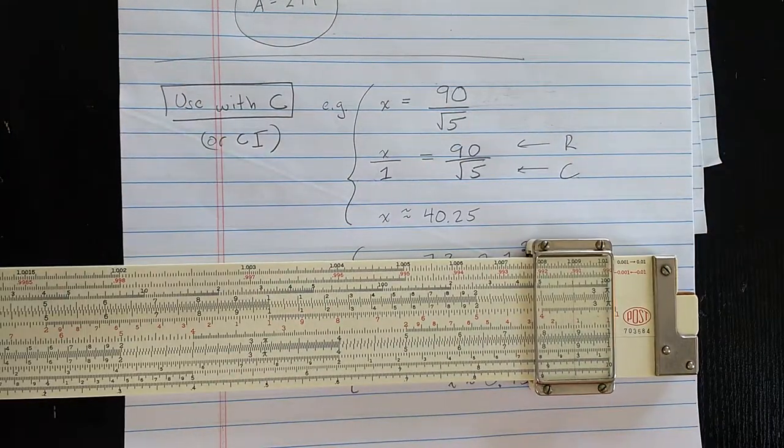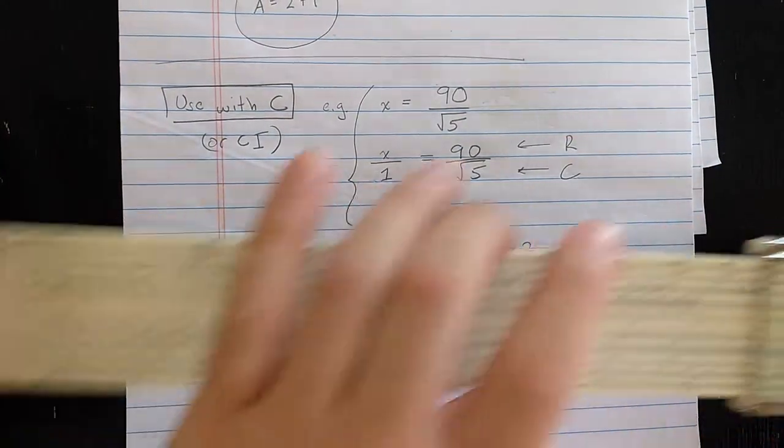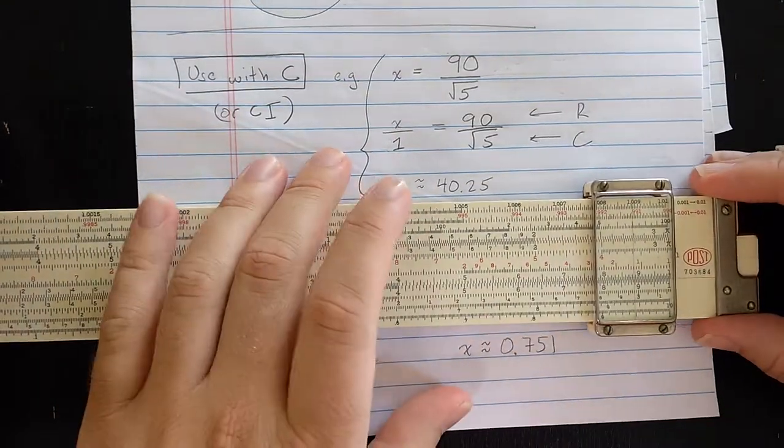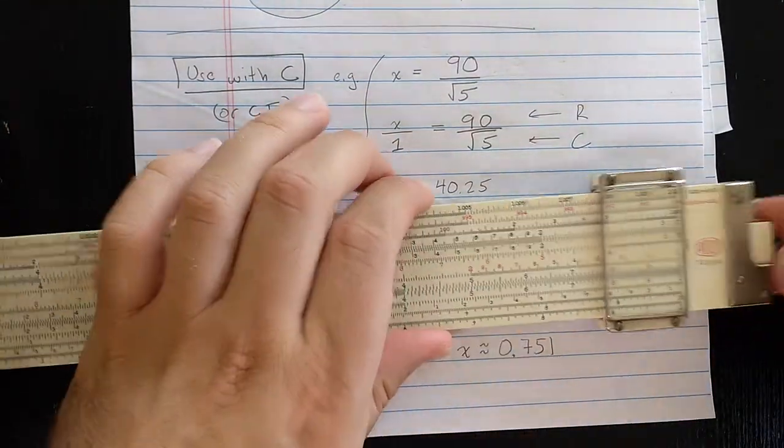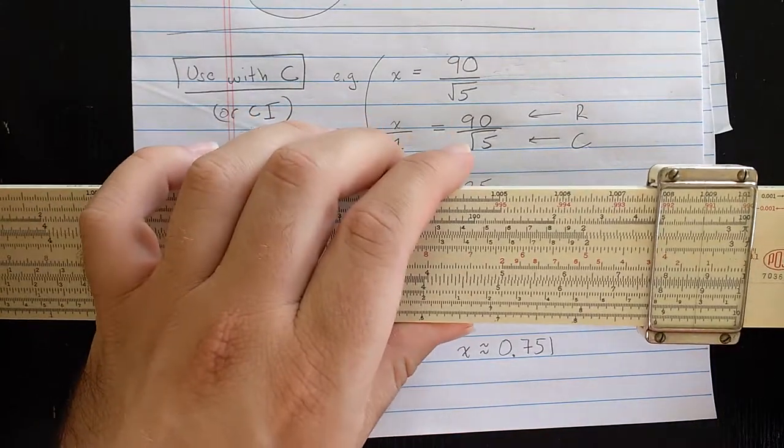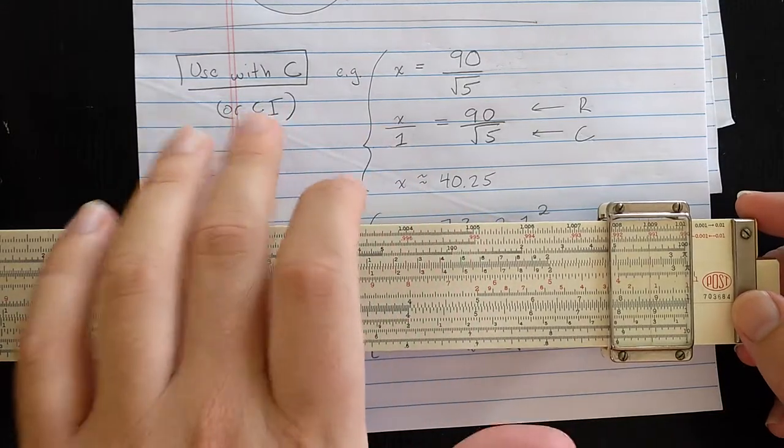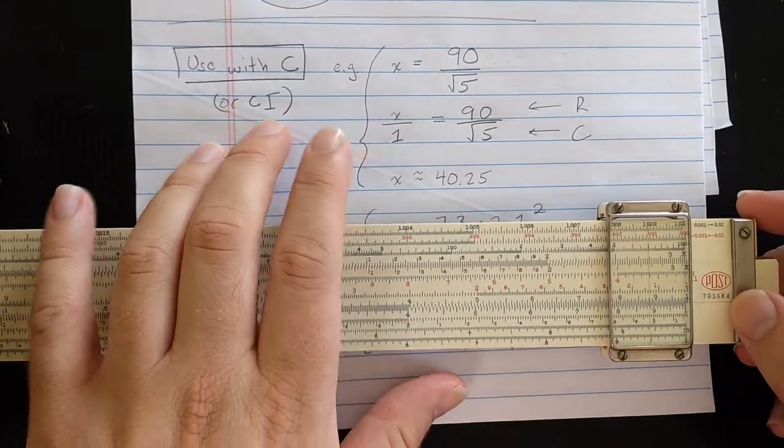Alright, so that's a nice bonus of having both the folded scales and the root scales on the same side of your slide roll. So, both on the base, that required the slide not at all, right? You could do computations with C or CI and start getting creative.